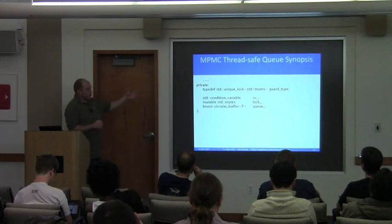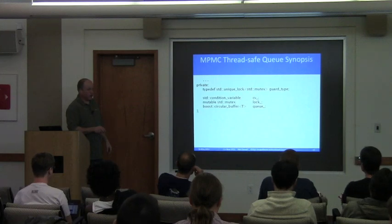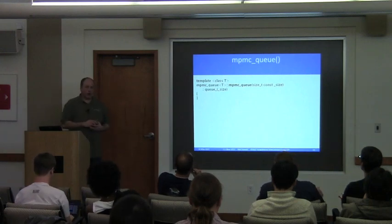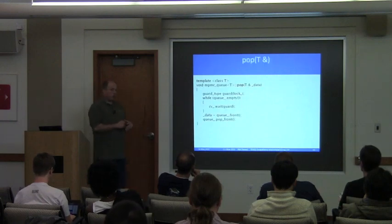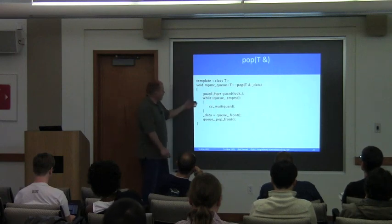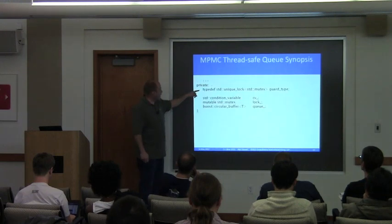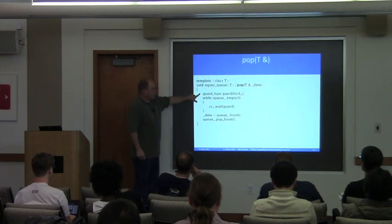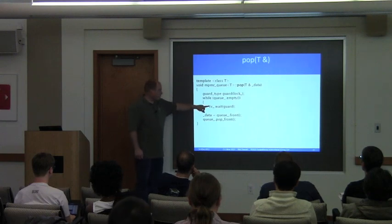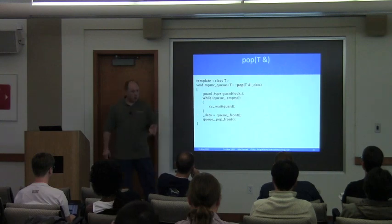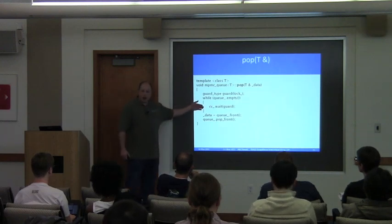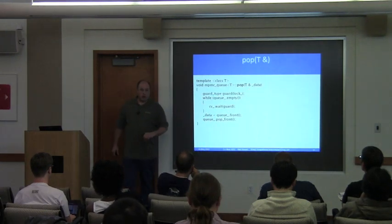To implement these we have a condition variable CV, a mutex called lock, and our circular buffer Q. Constructor simply initializes the size of the circular buffer. Pop is where it gets interesting — this is the one that blocks if there's no data. We create our unique_lock. While the queue is empty, we wait on the condition variable — that's the predicated wait handling spurious wakeups. Once we have data, we pull it off the front of the circular buffer, write through the output parameter, and pop the front.